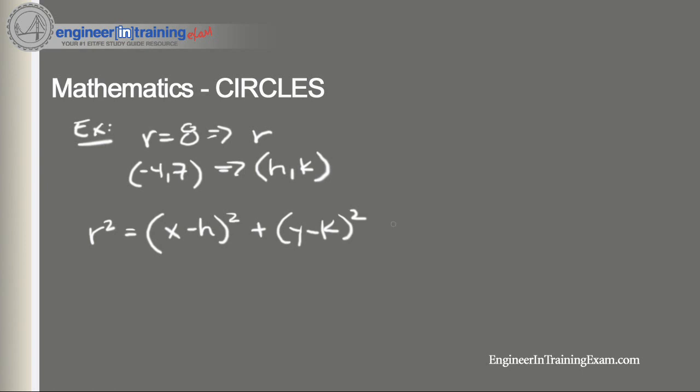And this is very simple. All we need to do is plug in all the given information. We got 8 squared is equal to (x minus negative 4) squared plus (y minus 7) squared.